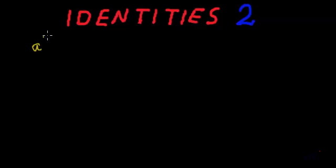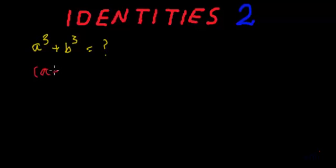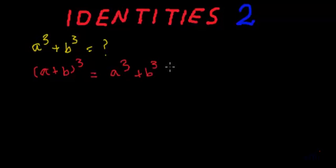Now let's derive the identity for a cube plus b cube. We have the formula for a plus b whole cube: a plus b whole cube equal to a cube plus b cube plus 3ab multiplied by a plus b. This was the formula for a plus b whole cube.